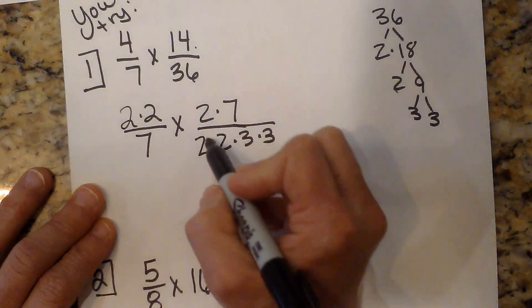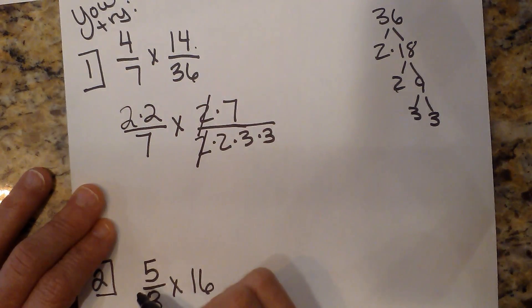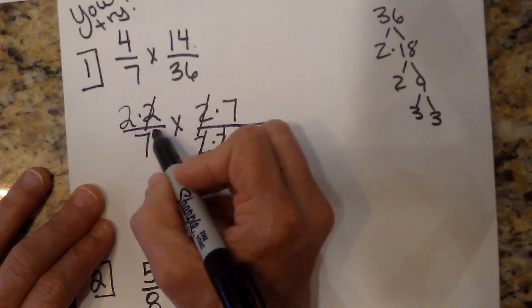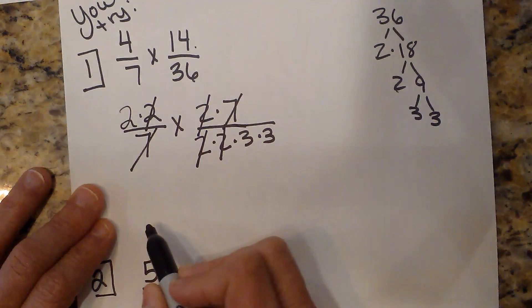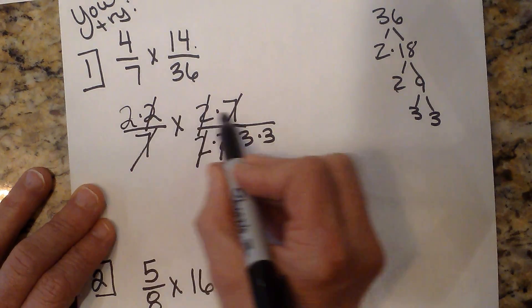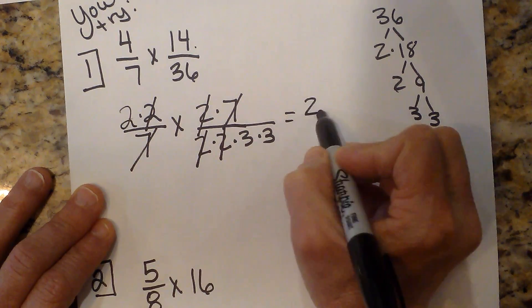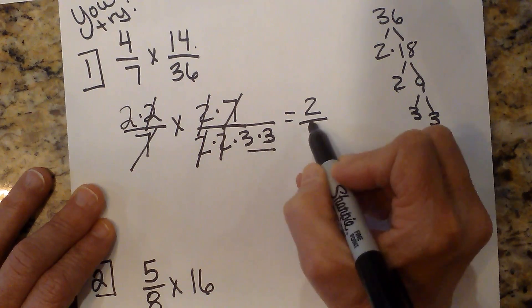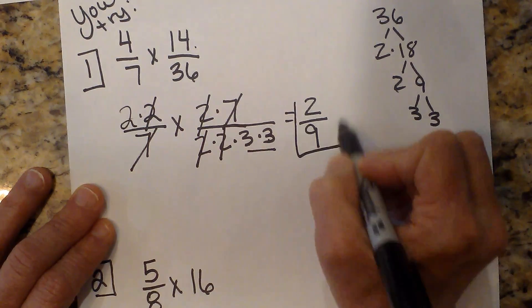Now let's cancel. So anything on top and bottom can cancel. I cancel out that set of twos. I cancel out this set of twos. I can cancel out the 7s. So what do I have left? Well, on top I only have a 2, and then on the bottom I have the two 3s. So 3 times 3 is 9. So it's 2/9.